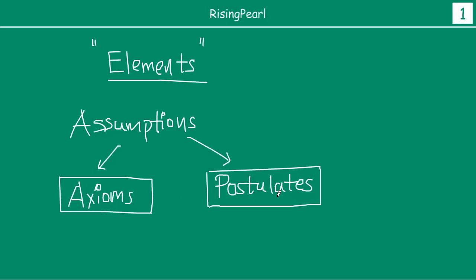Euclid actually used these axioms and postulates to then deduce more results. And once he got some of those results, he used them again to create even more results — this we basically call theorems in today's language. So this is very important to understand: what are these assumptions, axioms and postulates? Because we are talking about the absolute fundamentals of geometry, so we want you to pay attention to these things.